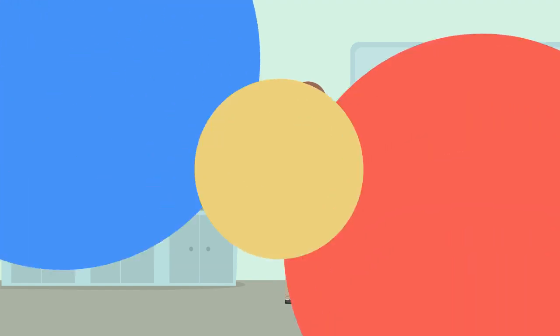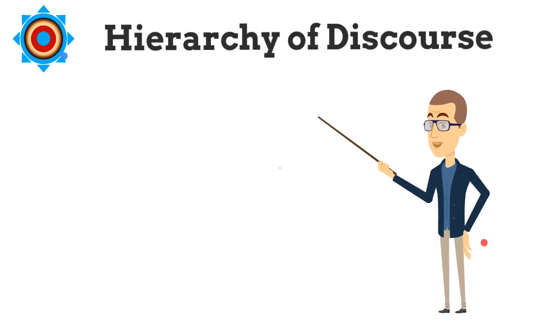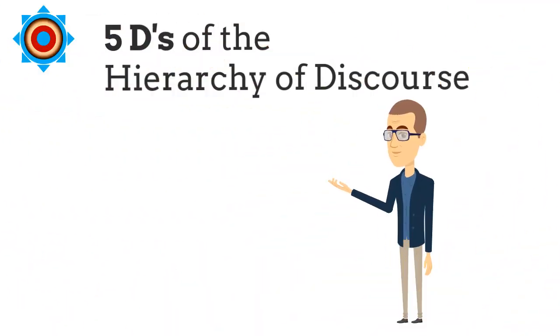The first thing we have to understand is there's a hierarchy of discourse. It's easier to remember if you think of them as the five D's. At the base level, the most disordered human discourse is...